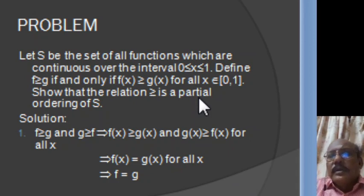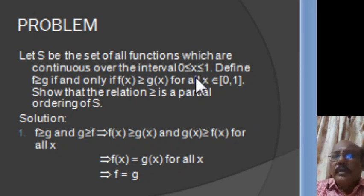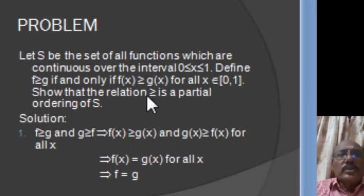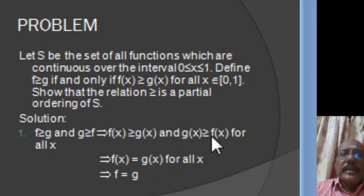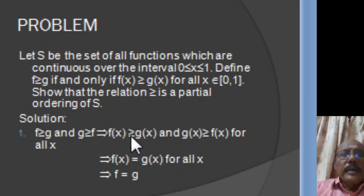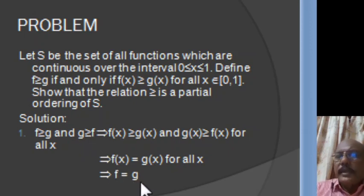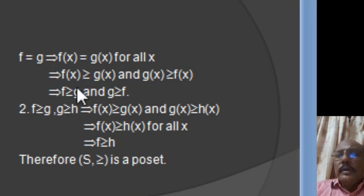Now we consider a problem. Let DS be the set of all functions continuous over the closed interval [0,1]. We define F ≥ G if and only if F(x) ≥ G(x) for all x in [0,1]. Let us show that this relation is a partial order on DS. Suppose F ≥ G and G ≥ F. Then by definition, F(x) ≥ G(x) and G(x) ≥ F(x), which implies F(x) = G(x) for all x, meaning F = G.